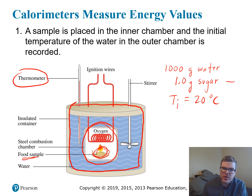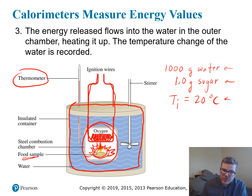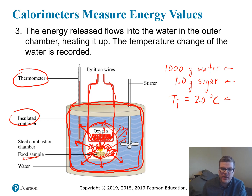In this experiment, we burn the sugar. It releases its energy, which goes into the water and changes the water's temperature — that's why we measured the initial temperature. We burn the sample using ignition wires; current runs through them, they heat up, and the sample bursts into flames and combusts. As the sample combusts, the energy released flows out of the inner chamber into the surrounding water, where it stops because of the insulated outer wall. All of the energy lost from the combusting food goes into the water and is not lost to the environment.